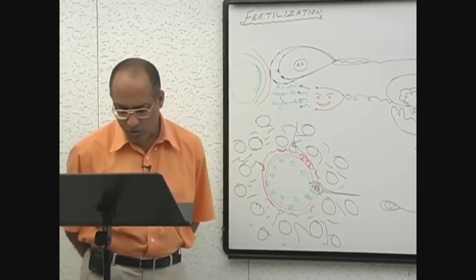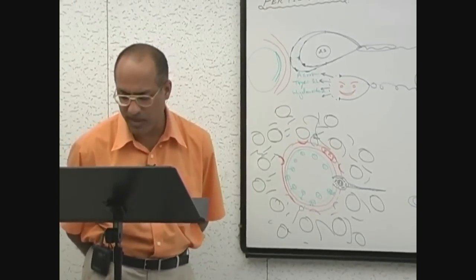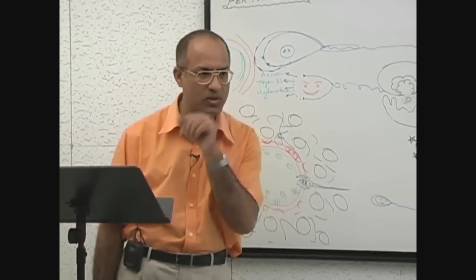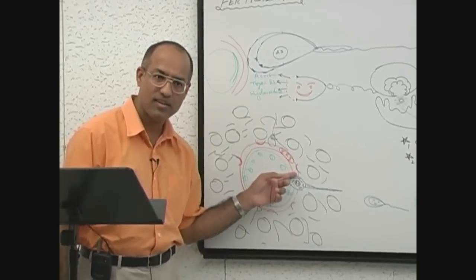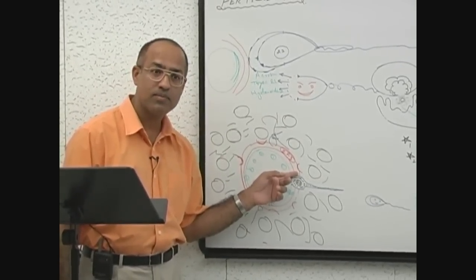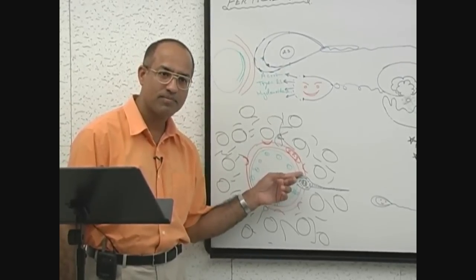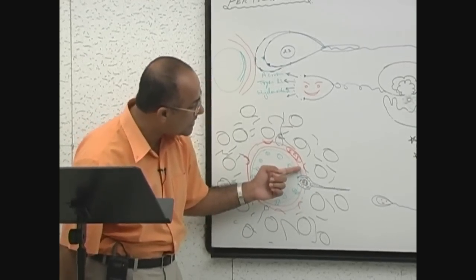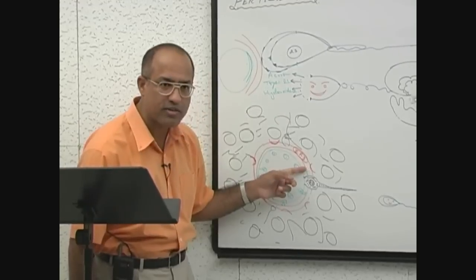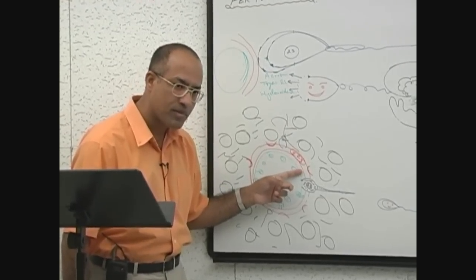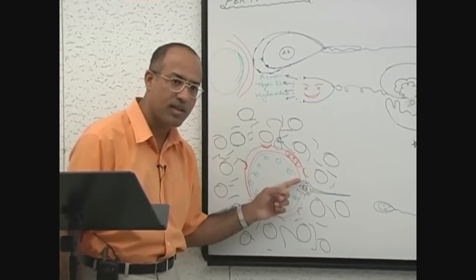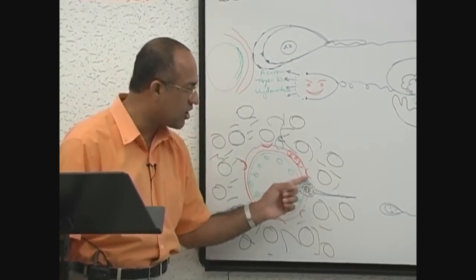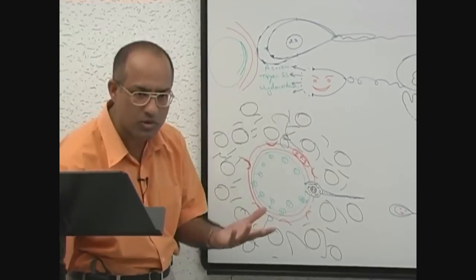During the zona reaction, zona pellucida alters and it inactivates species-specific receptors. Why are they species-specific? These special receptor sites allow only the human sperm to touch there and get attached there. Sperm from other sources, other than human males, will not be able to penetrate through the zona pellucida.